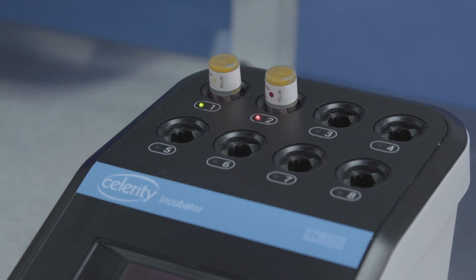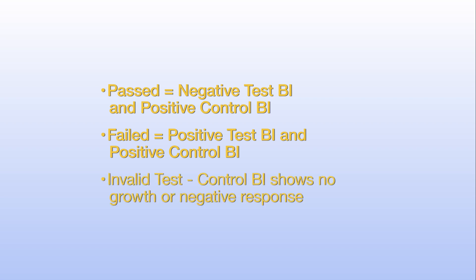The testing passes if the process BI is negative for growth and the control BI is positive for growth. The testing fails if the process and control BI are both positive for growth. If the control BI demonstrates a negative response or no growth, the results are invalid and testing must be repeated.